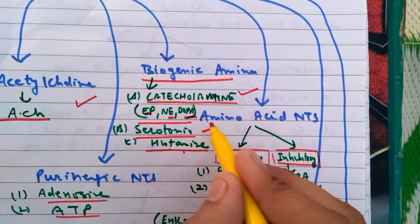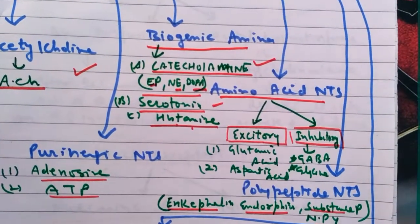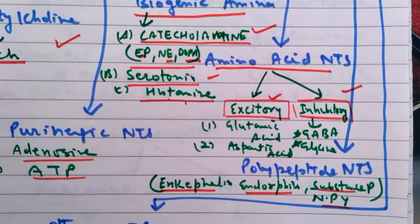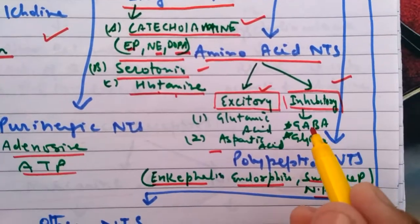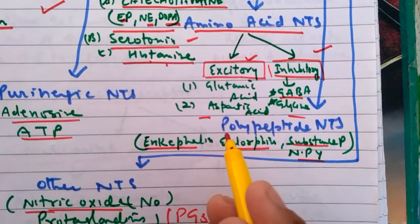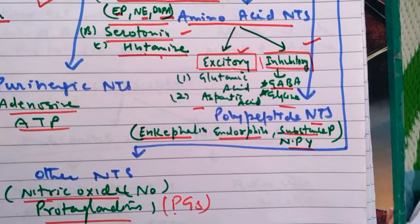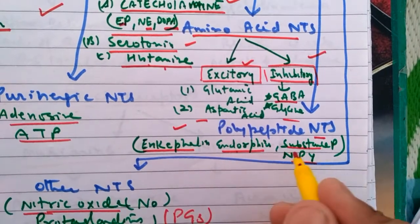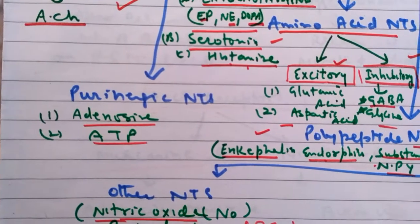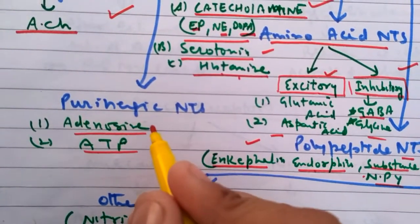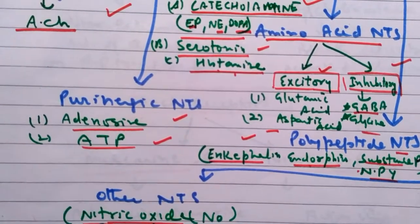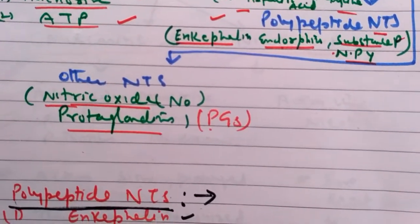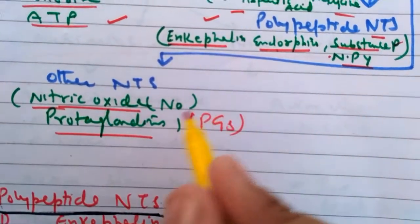The third category is amino acid neurotransmitters. Some amino acids act as neurotransmitters directly; they can be excitatory — glutamic acid and aspartic acid — or inhibitory — GABA and glycine. Next are polypeptide neurotransmitters, which are chains of a few amino acids: enkephalin, endorphin, substance P, and neuropeptide Y. Then there are purinergic neurotransmitters — adenosine mono-, di-, and triphosphate — containing adenine and guanine bases, purine in nature. Miscellaneous types include nitric oxide and prostaglandins.